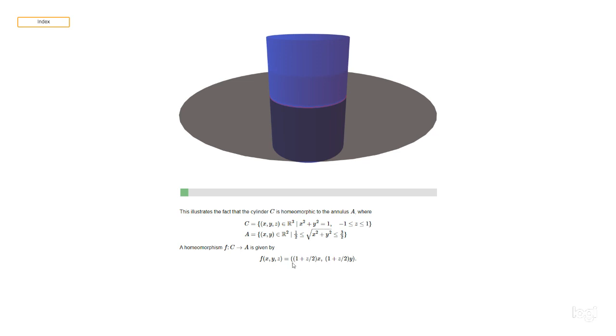So you've got the point (x, y) on the unit circle and you're multiplying it by the scalar (1 plus z over 2) which is running between a half and three halves. So that gives us this annulus.